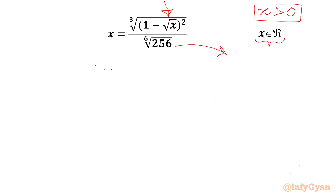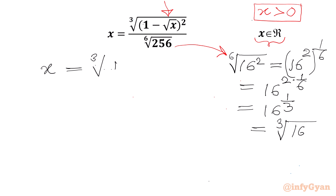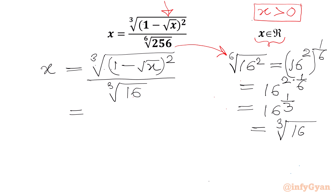I will begin with the denominator: 6th root of 256. We can write 256 as 16 squared, so the 6th root of 256 is (16²)^(1/6). Using the exponent law, this is 16^(2 × 1/6) = 16^(1/3), which is the cube root of 16. So the denominator simplifies to the cube root of 16, and using exponent laws we can write the whole expression as the cube root of (1 minus square root x) squared over 16.